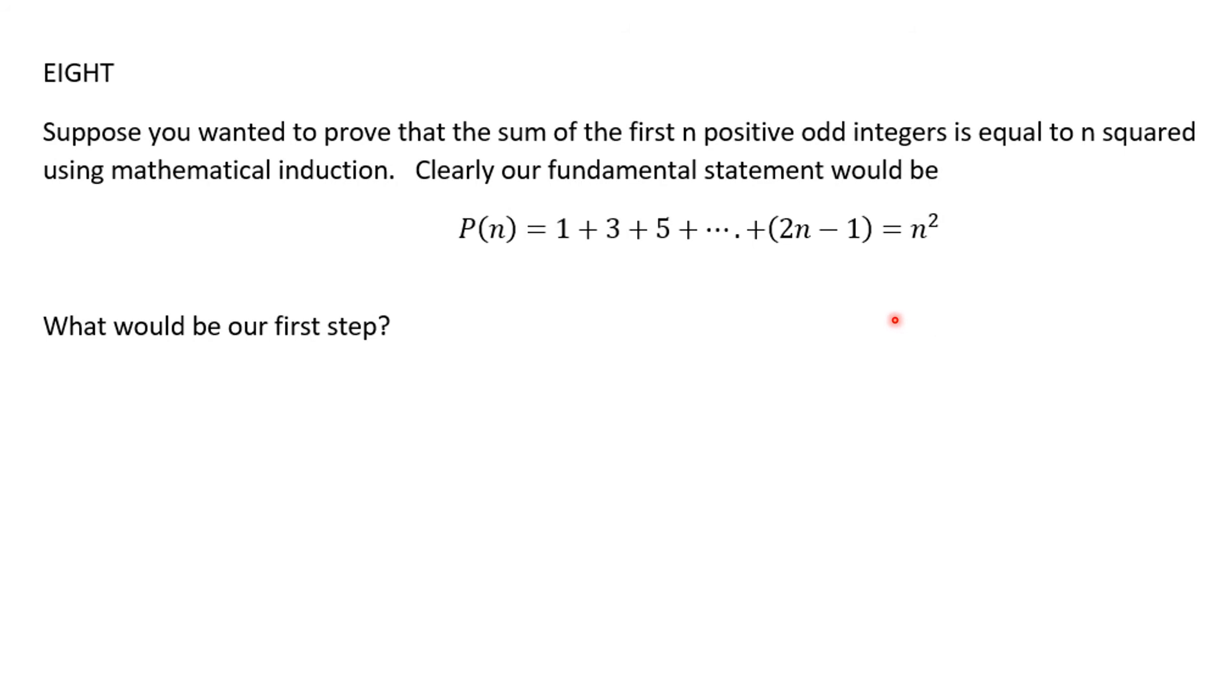Eight, this is going back to chapter 2. Suppose you wanted to prove that the sum of the first n positive integers is equal to n squared using mathematical induction. So clearly our fundamental statement would be P of n is equal to, I add up the odd positive integers, 1, 3, 5, plus dot dot dot, all the way up to, and this is a representation of the nth odd integer equals n squared. But what would be our first step? That's what you're supposed to answer here.